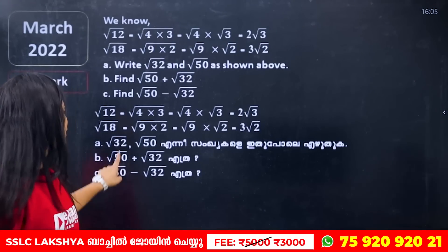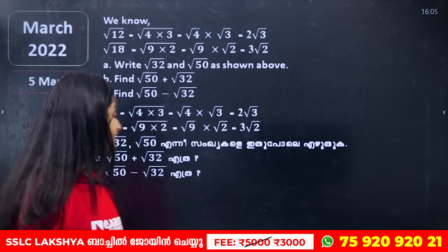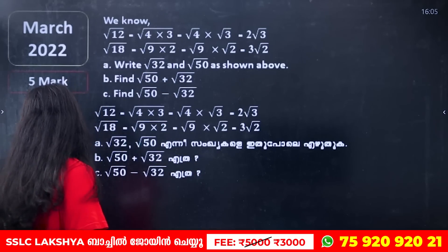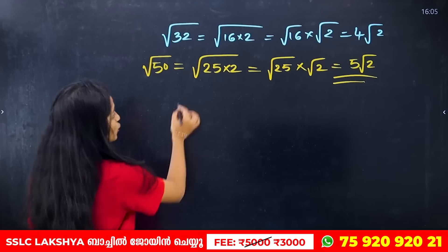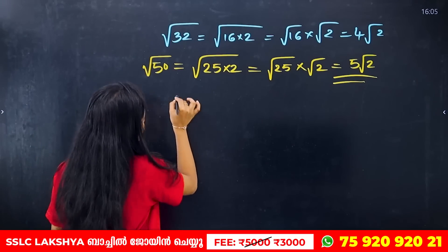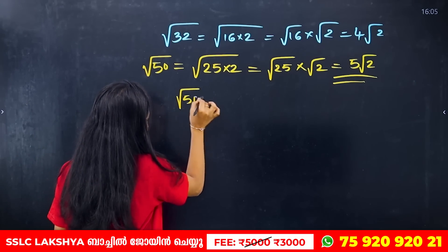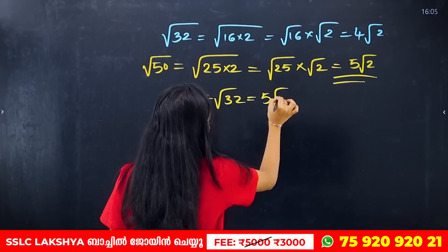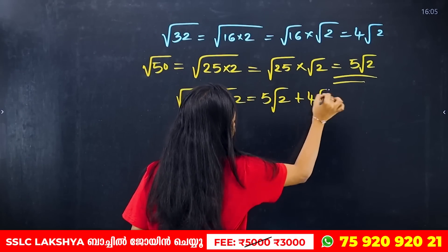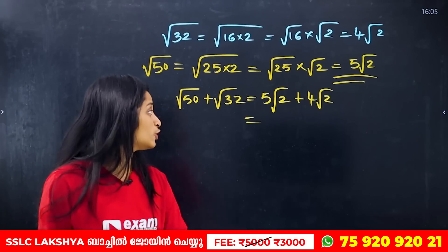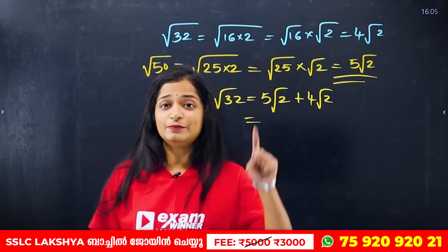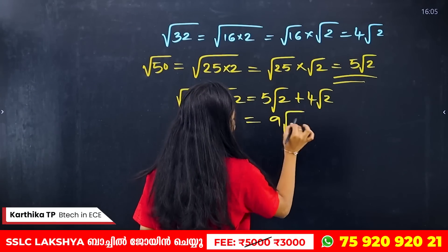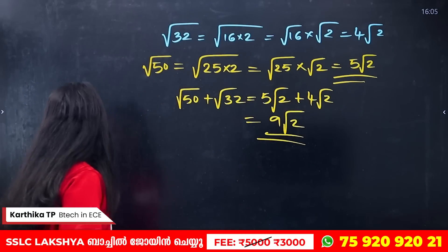The answer is root 50 plus root 32. Root 50 is 5 root 2, and root 32 is 4 root 2. So, 5 root 2 plus 4 root 2 equals 9 root 2. The answer is 9 root 2.